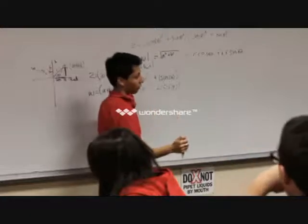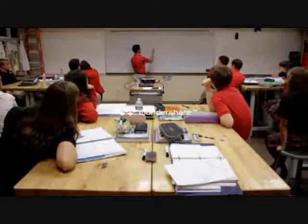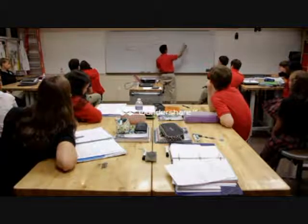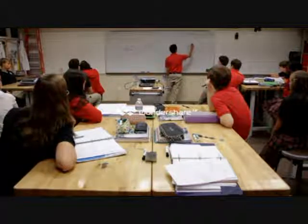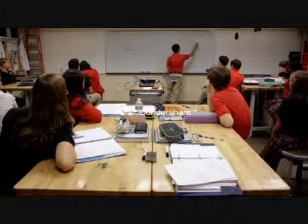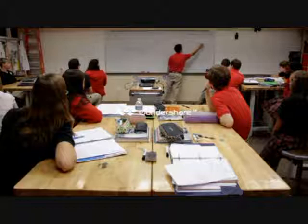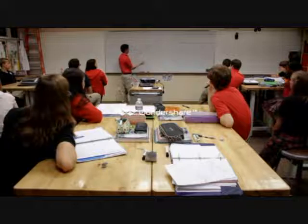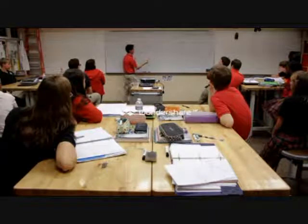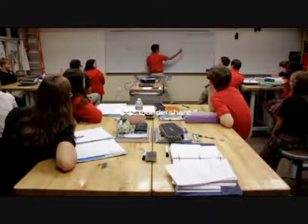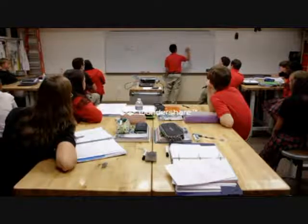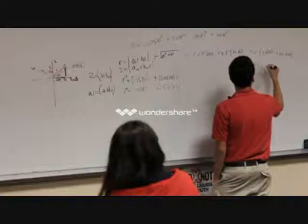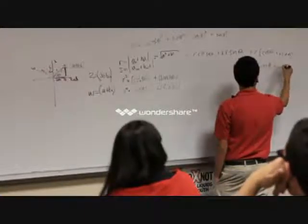We hadn't used the squares before, so we can just write it out as this. Then we factor out the R's, giving us R(cosine theta + i sine theta). We do the same thing with W except using phi, because phi is the angle we're using. So that equals S(cosine phi + i sine phi), where S is the hypotenuse instead of R.